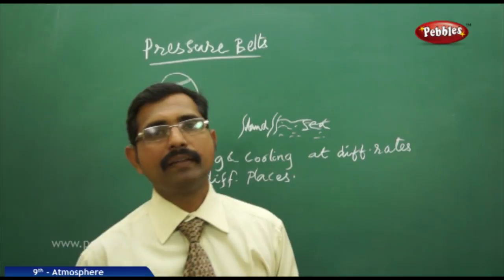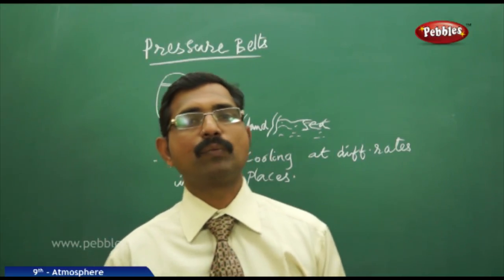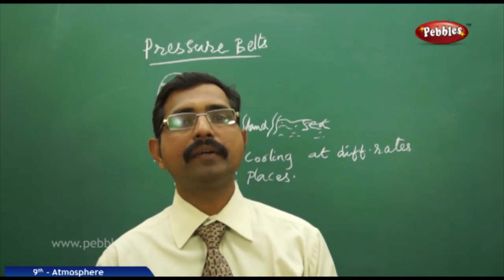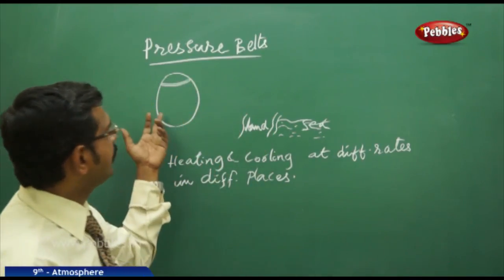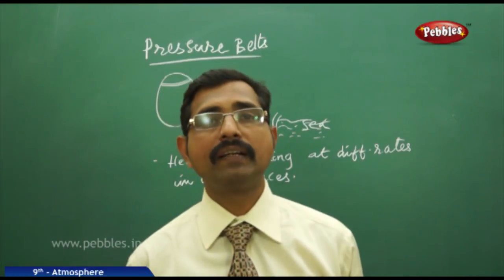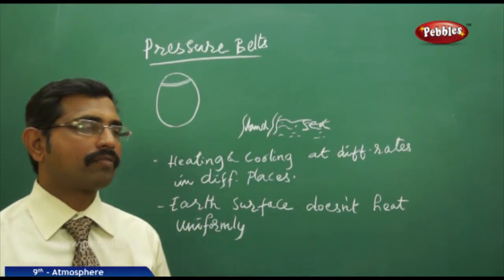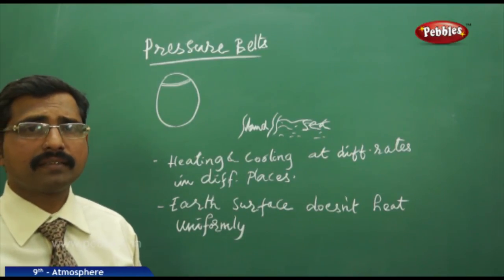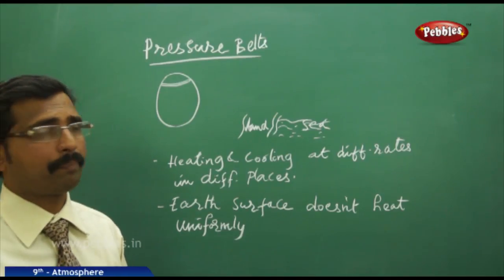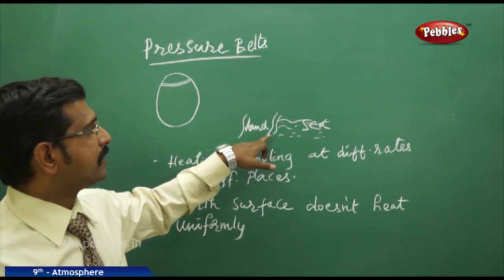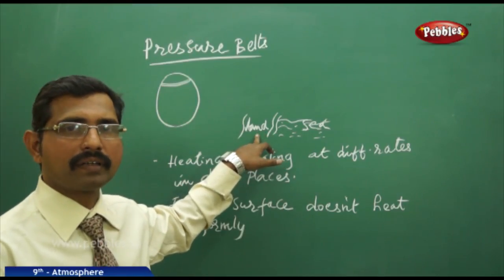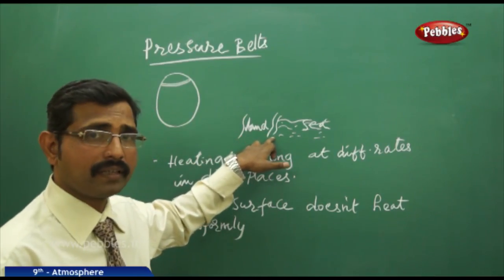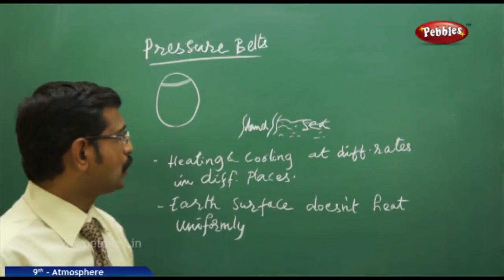Air pressure and the pressure belts vary from one zone to another. For example, at the poles you feel higher pressure belts and at the equator you feel low pressure belts. Earth's surface does not heat uniformly — at different places it heats up at a different pace. Land near the sea has a different temperature phenomenon compared to land further inland and the sea itself.